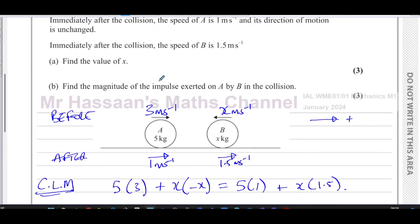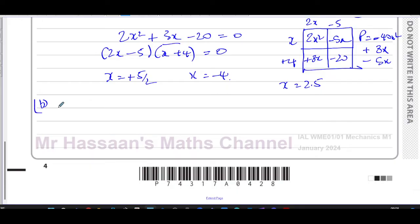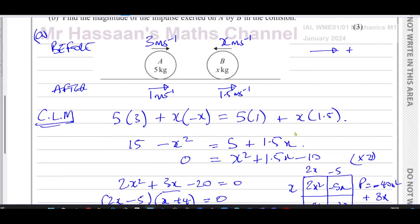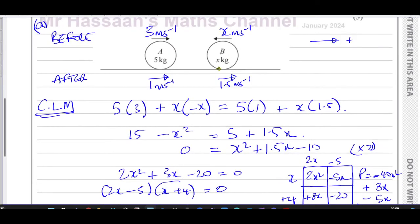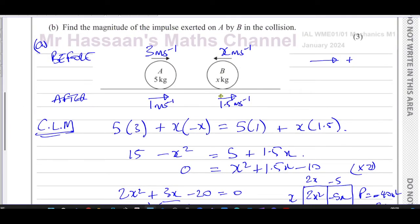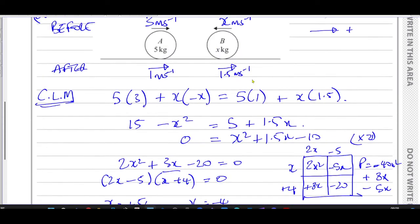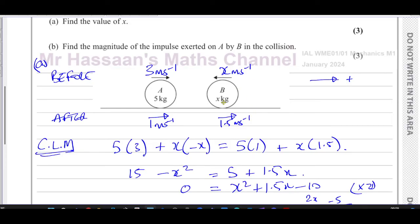Now it says find the magnitude of the impulse exerted on A by B. Now what I would do here, supposing we made a mistake in A, very possible for someone to make a mistake. Now B, if we use our answers for A and we find out the change of momentum of B, that would be the magnitude of the impulse exerted on A. But in case we've done something wrong, the best thing to do is use A because we know the information about it beforehand given in the question.